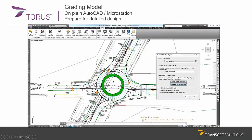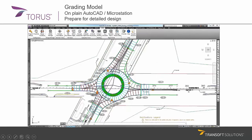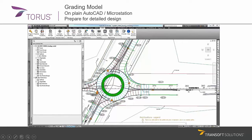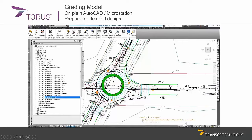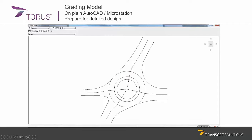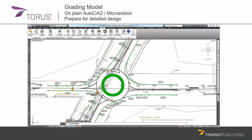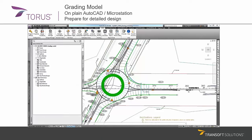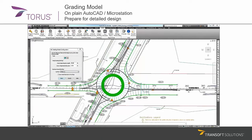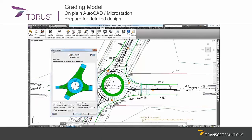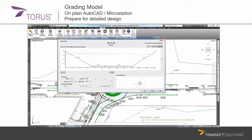Once you are ready with the design, you can export CV3D alignments and profiles out from it, or you can export LandXML files and you can start designing or detailing your roundabout design in 3D in various applications such as AutoCAD Civil 3D.